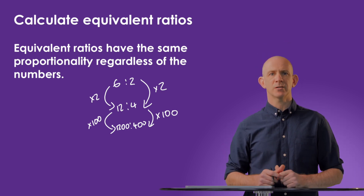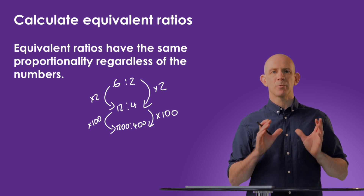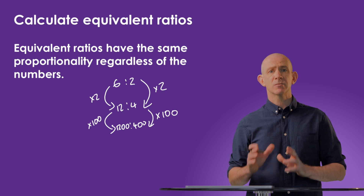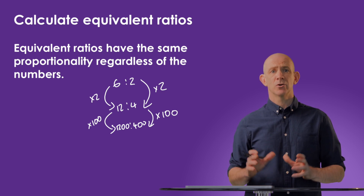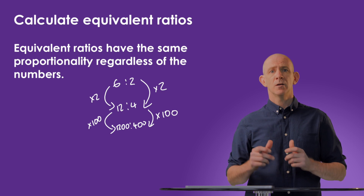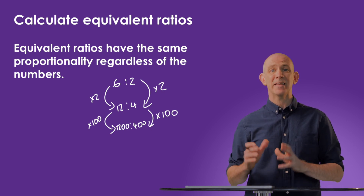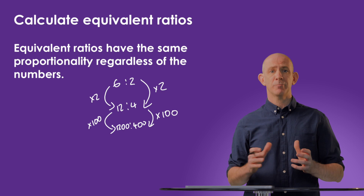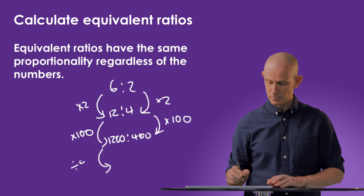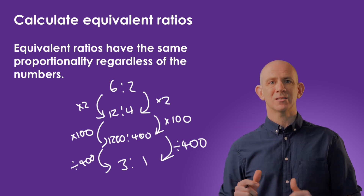Simplifying means dividing both sides by the highest common factor — the biggest number that has both 1200 and 400 in its times tables — to get to the smallest integers, or whole numbers, whilst keeping the proportionality the same. The highest common factor of 1200 and 400 is 400, so we can divide both sides by 400 to get the ratio of 3 to 1, and this is the ratio written in its simplest form.